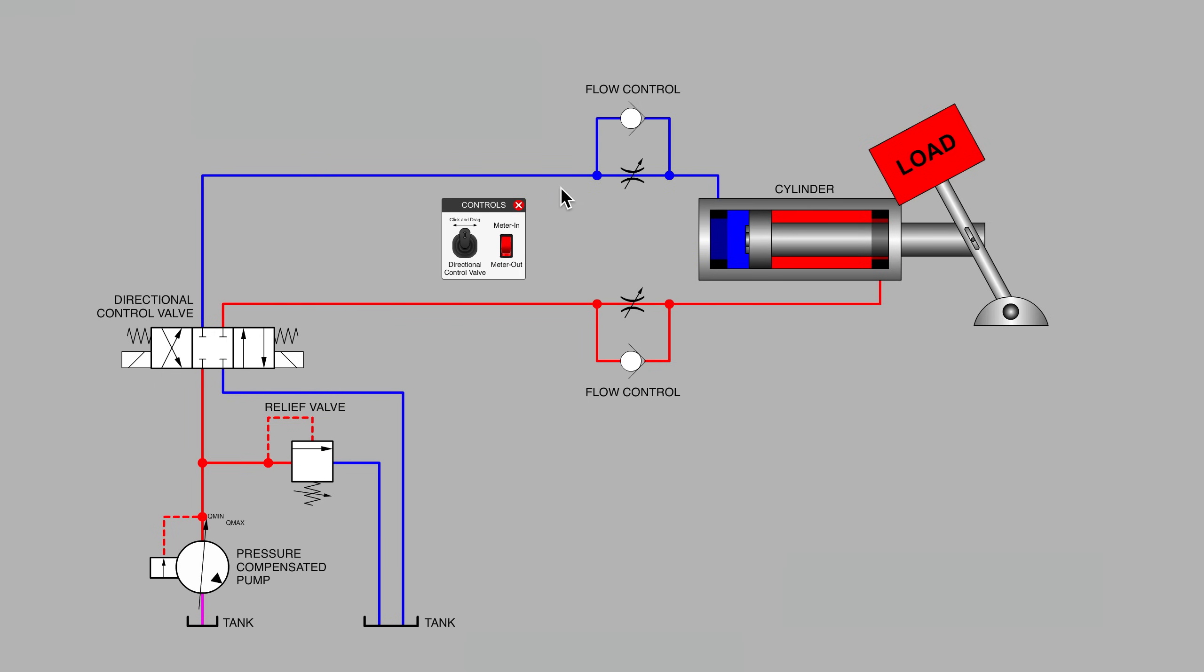So the way we have this particular flow control plumbed in to the blind end of the cylinder, we are currently set up for a form of flow controlling called meter in. And the word meter in or the word meter out is not a reference to which direction the cylinder is traveling, but rather a reference to whether or not we are controlling the rate of flow as fluid enters the cylinder or as fluid is leaving the cylinder. So in this case, we are set up to meter the fluid as it enters the blind end of the cylinder.